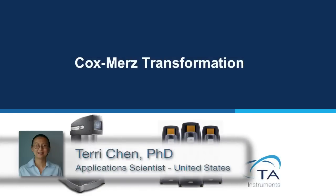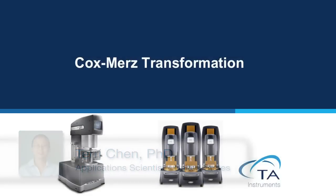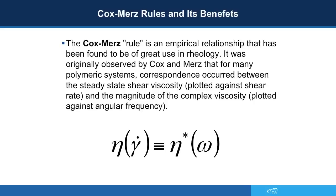This TA Tech Tip is going to show you how to perform Cox-Merz transformation using TRIOS software. The Cox-Merz rule is an empirical relationship that has been found to be of great value in rheology. It was originally observed by Cox and Merz that for many polymeric systems, correspondence occurred between the steady shear viscosity plotted against shear rate and the magnitude of complex viscosity plotted against angular frequency.